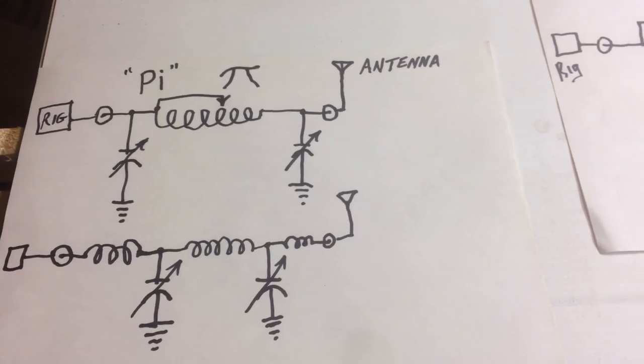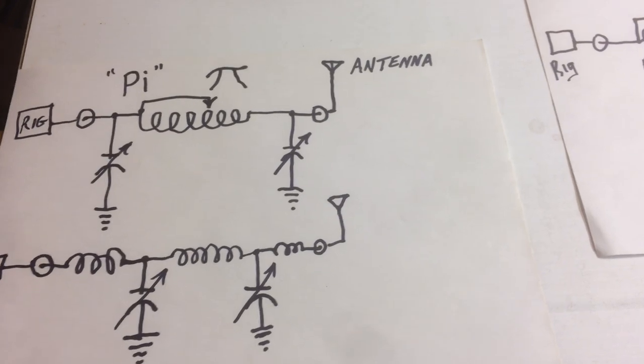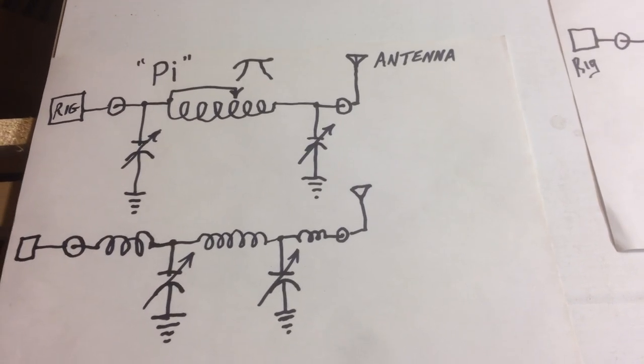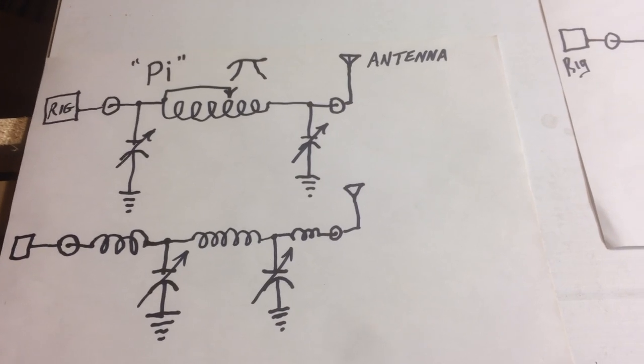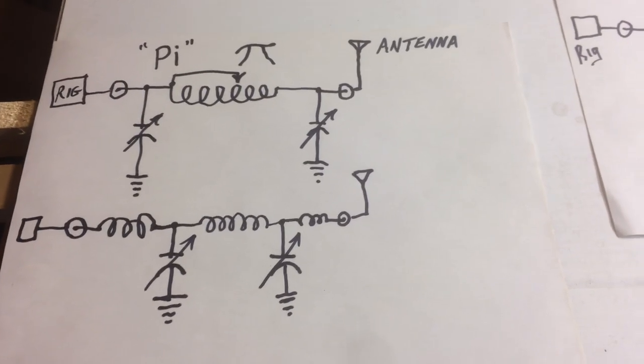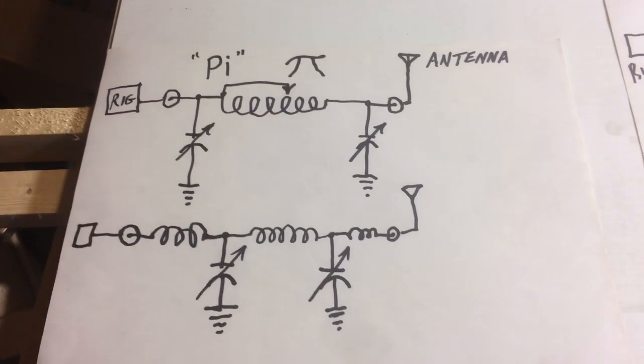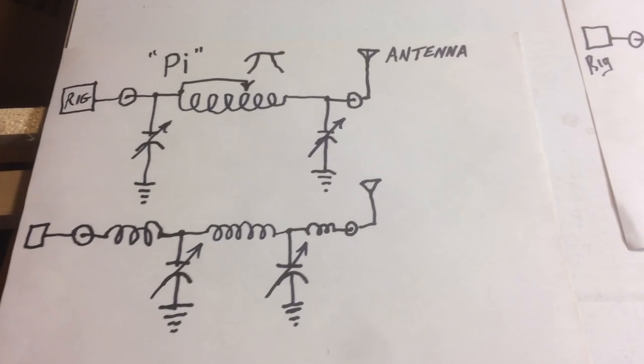Good day folks. Greetings from Foxtrap on the island of Newfoundland. We'll look at some basic types of antenna tuners. The three basic types, and there's variations on those as well. Three basic types would be the Pi, the L, and the T network.